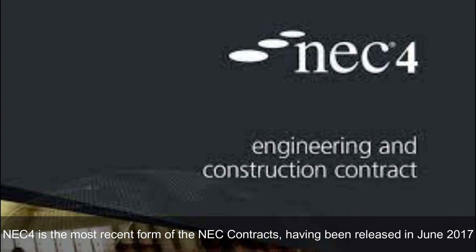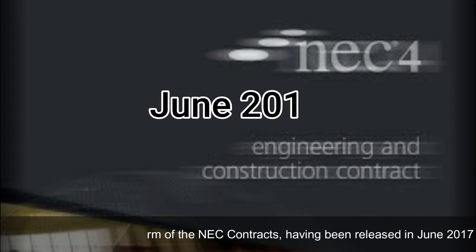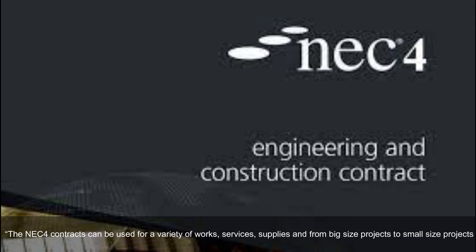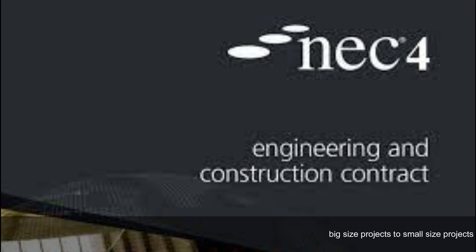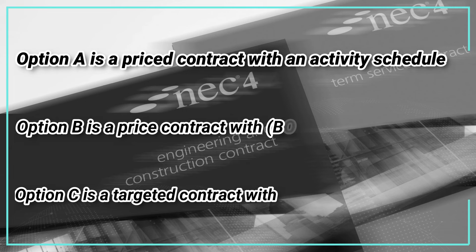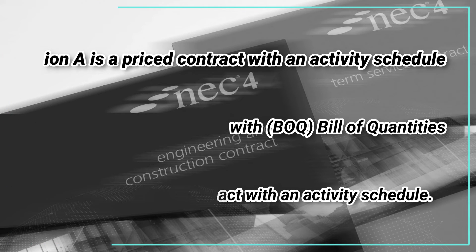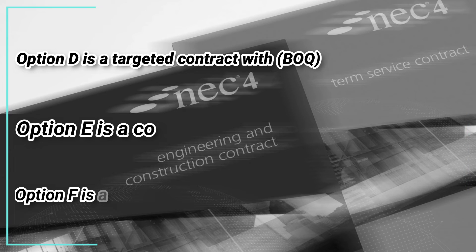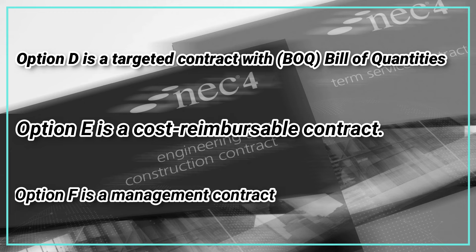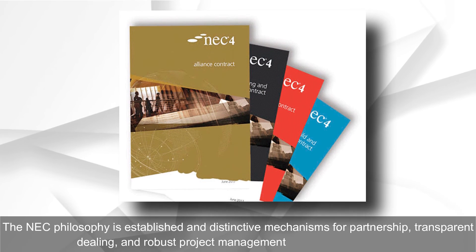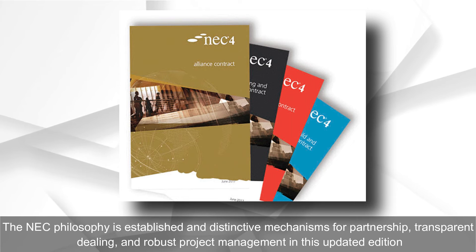NEC 4 contract: NEC 4 is the most recent form of the NEC contracts, released in June 2017. It can be used for a variety of works, services, and supplies, from large to small projects. Option A is a priced contract with an activity schedule; Option B is a priced contract with a bill of quantities; Option C is a targeted contract with an activity schedule; Option D is a targeted contract with a bill of quantities; Option E is a cost-reimbursable contract; Option F is a management contract.